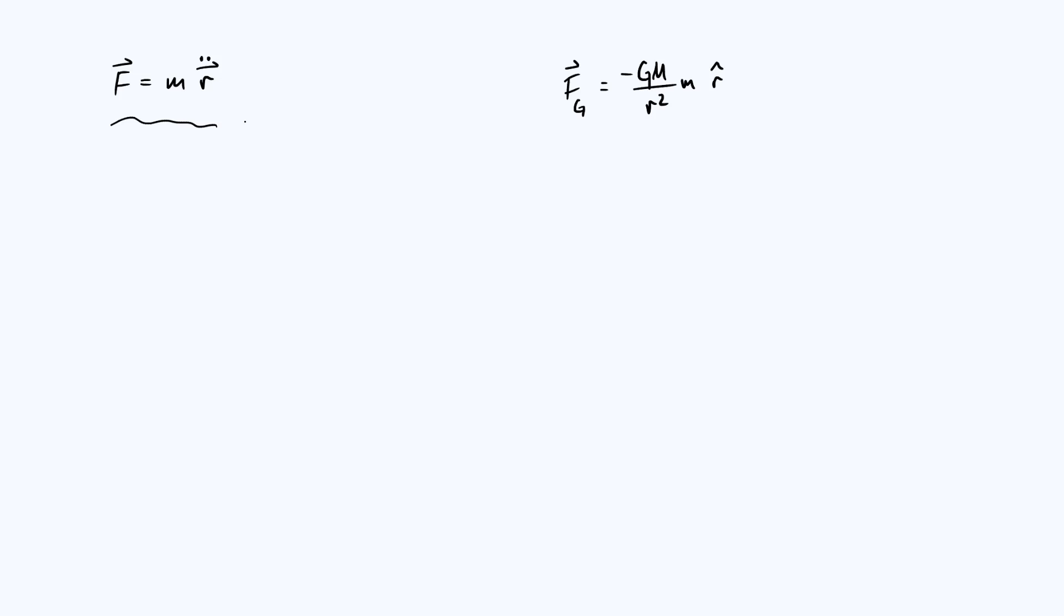This is Newton's law in one of its forms assuming that our object has a constant mass, and this equation leads us to a certain interpretation of mass which is that mass is resistance to acceleration.